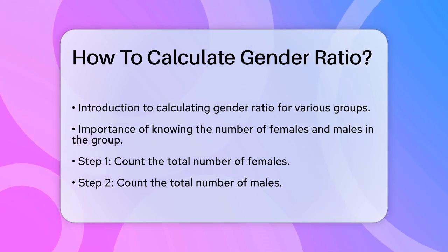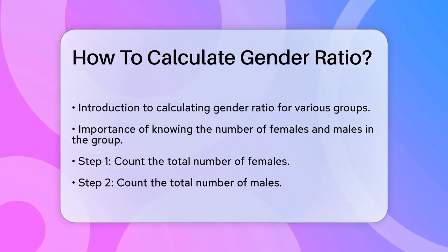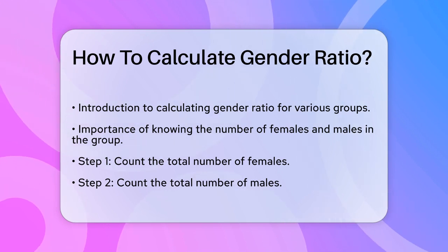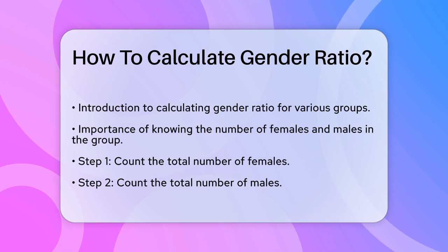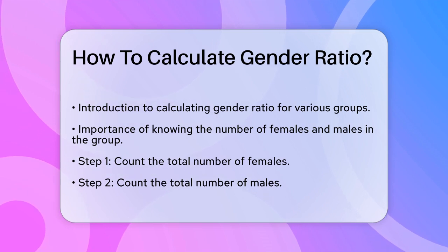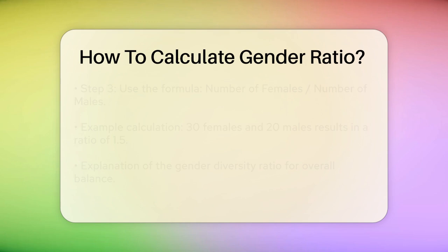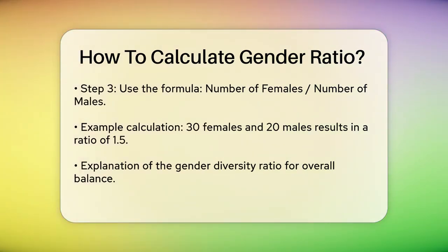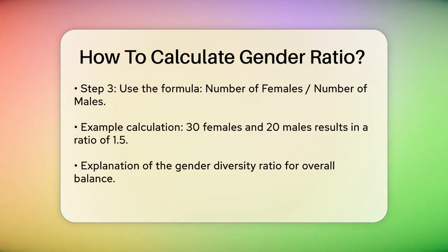One common way to do this is to find the ratio of females to males. Here's how you can do it: count the total number of females, count the total number of males, then divide the number of females by the number of males. For instance, if there are 30 female employees and 20 male employees, the gender ratio equals 30/20 = 1.5. This means there are 1.5 females for every male in the group.